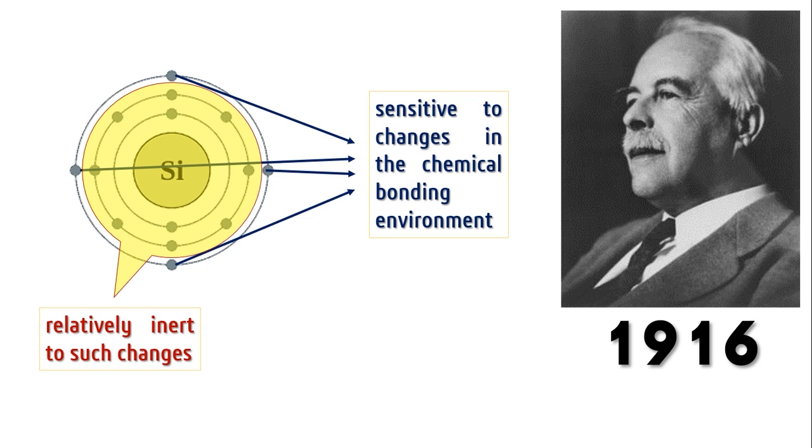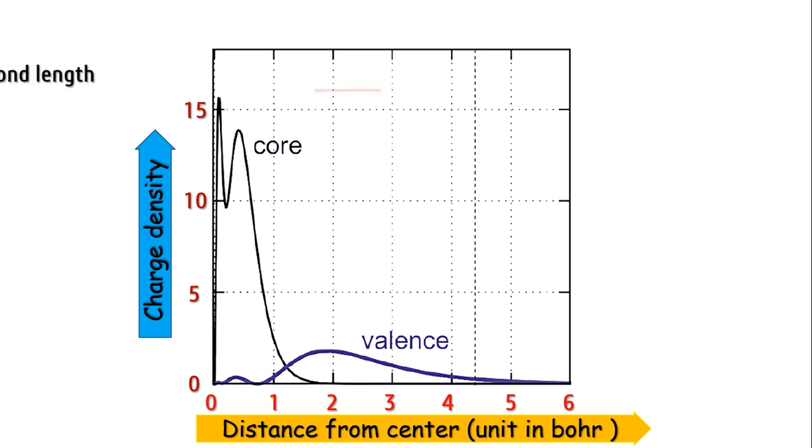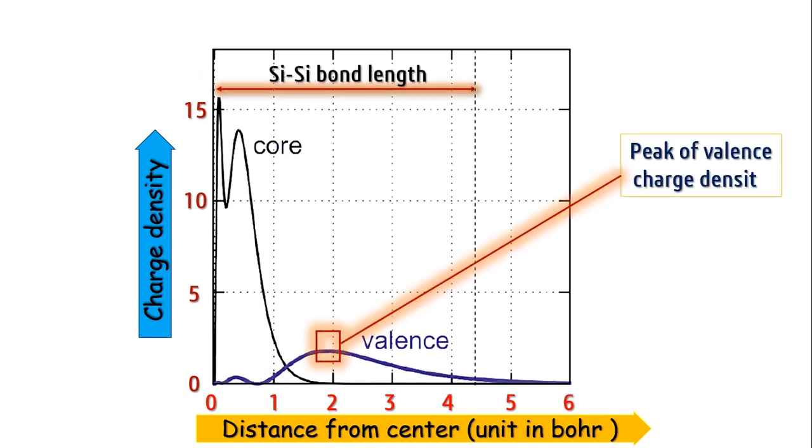Not only that, also if you look at the electron densities, the valence charge density peaks at a radius corresponding approximately to half the silicon-silicon bond length in silicon, while the core electrons are localized near the nucleus.